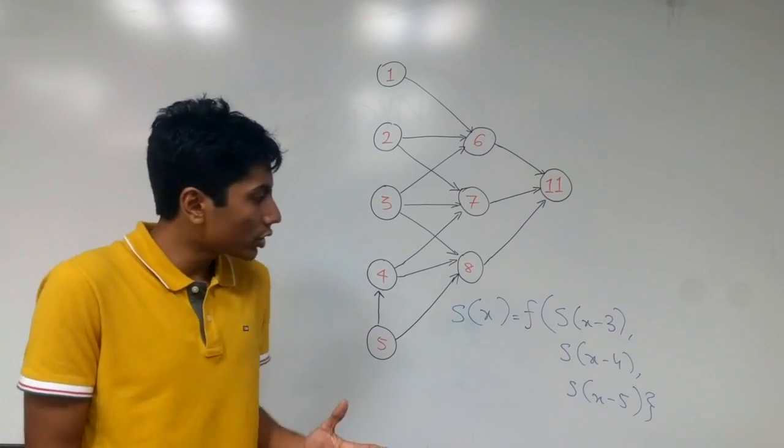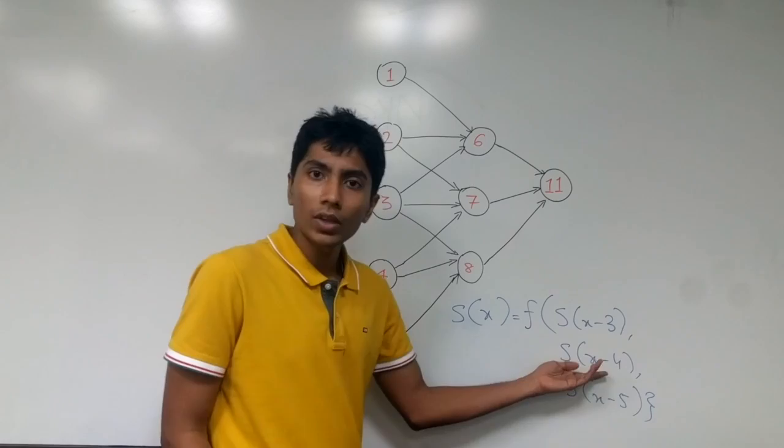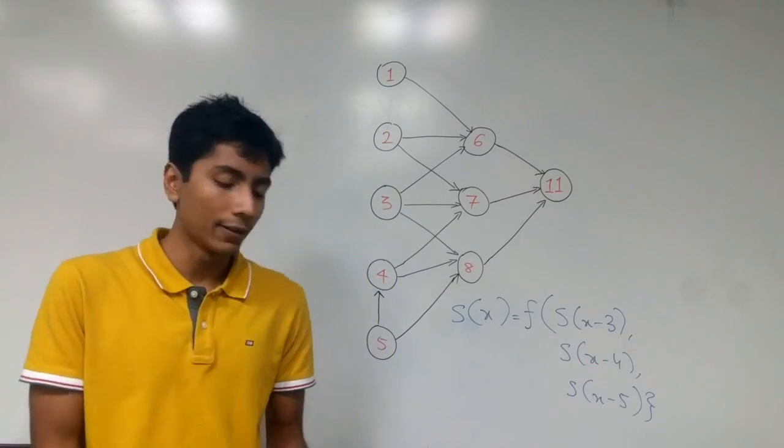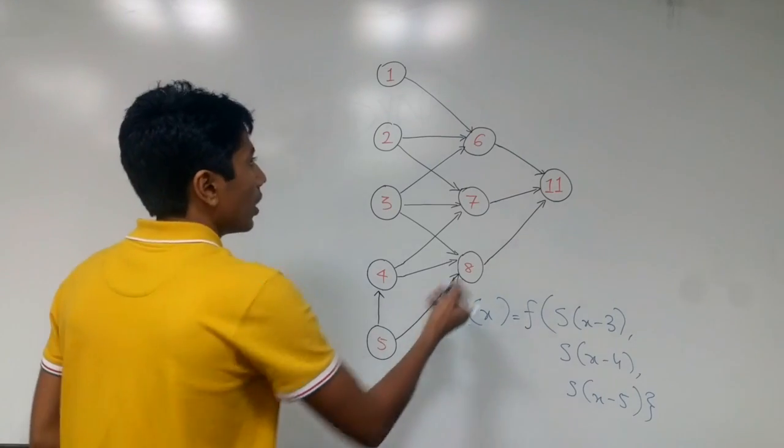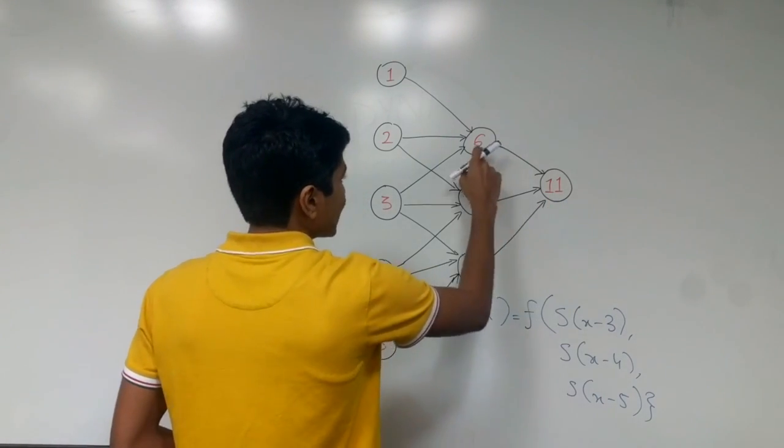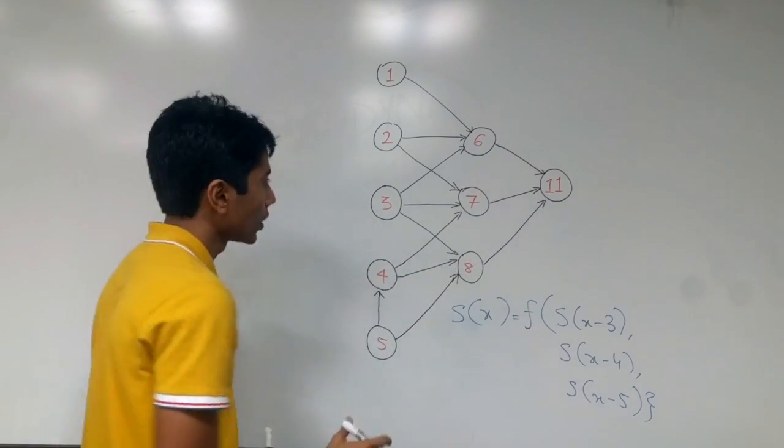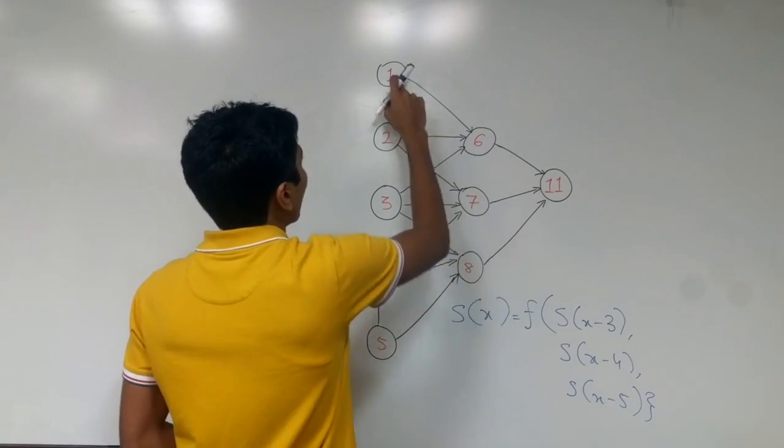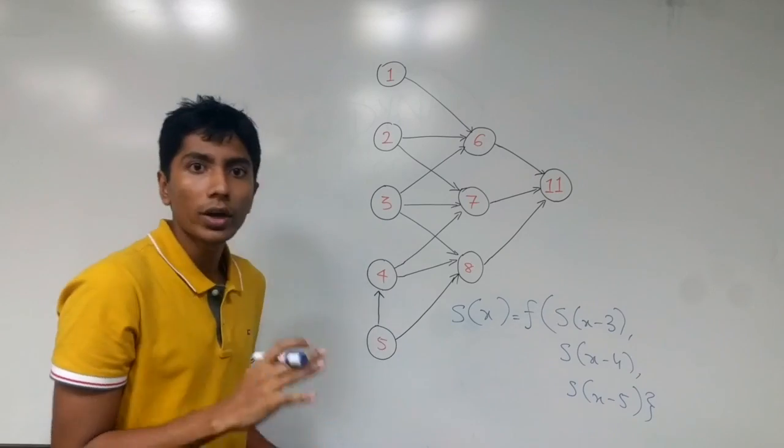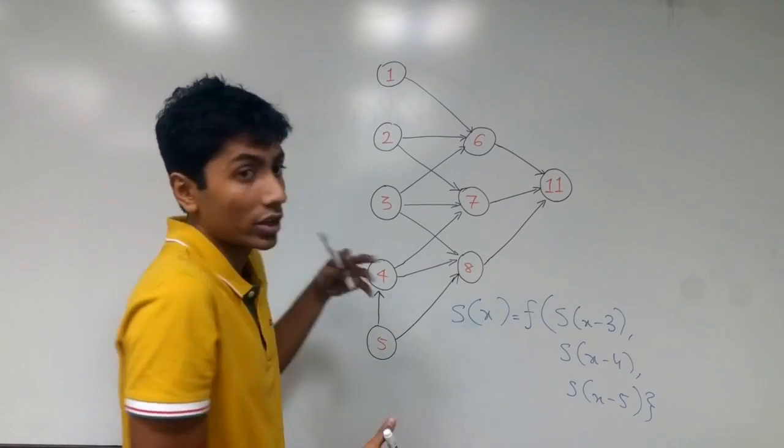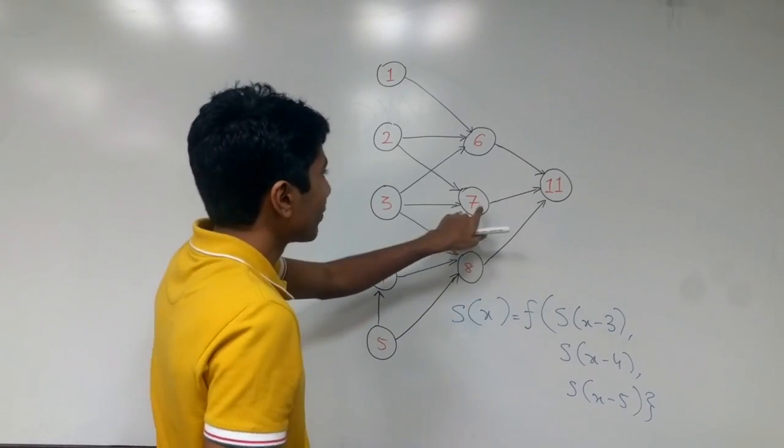What happens now is that you want to save these states instead of computing them again and again. For example, at 11 you want 6, 7, and 8 to be computed. So what you do is you go to 6 and you say 1, 2, and 3 have to be computed. That makes sense because we haven't actually computed them earlier.